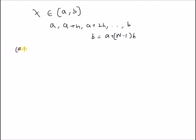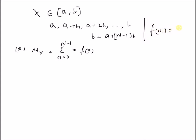The first problem is the mean — we want to find the mean of this random variable x, which is defined as summation from small n equal to 0 to n minus 1 of x into f of x. For a discrete uniform distribution, f of x is equal to 1 by n, the number of possible values. So the summation becomes summation from n equal to 0 to n minus 1 of the value a plus n into h, into 1 by capital N.